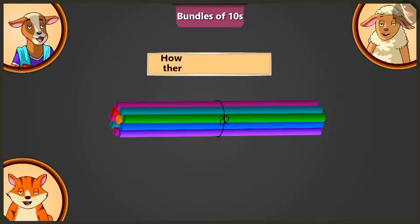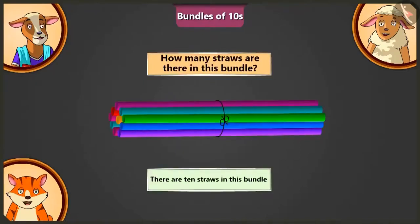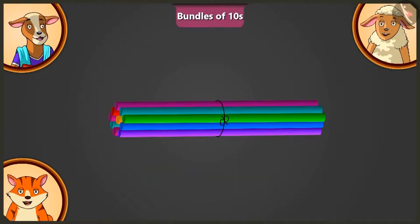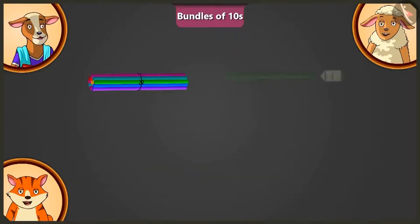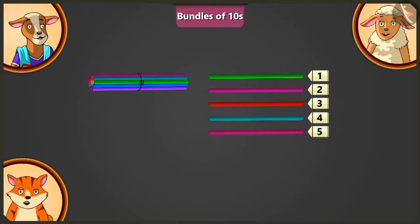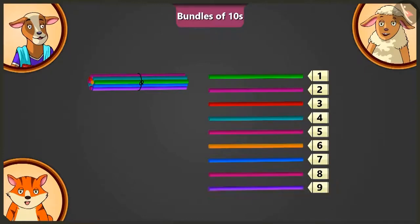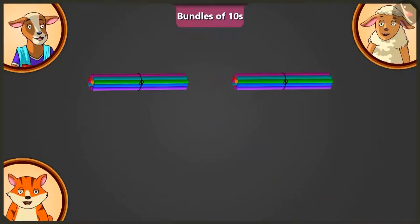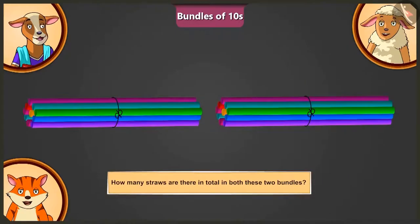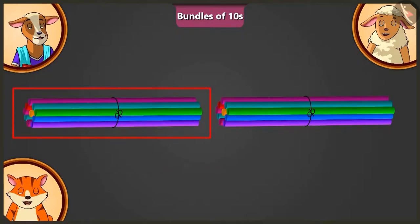Billy, how many straws are there in this bundle? There are ten straws in this bundle. Now, in the same way, make a second bundle of ten straws. One, two, three, four, five, six, seven, eight, nine and ten. Billy, how many straws are there in total in both these bundles? In both these bundles, there are ten and ten — twenty straws in total.